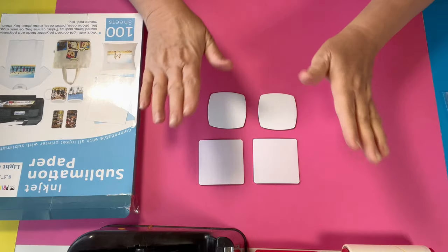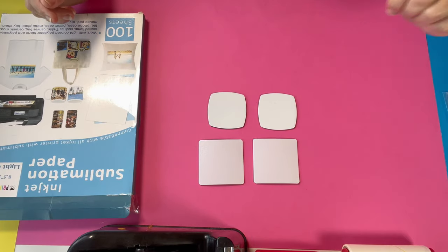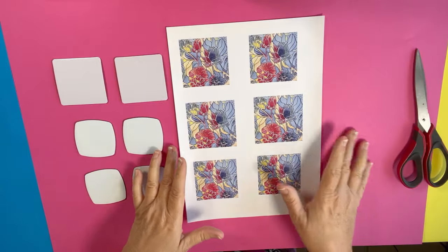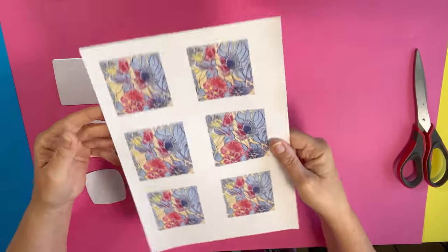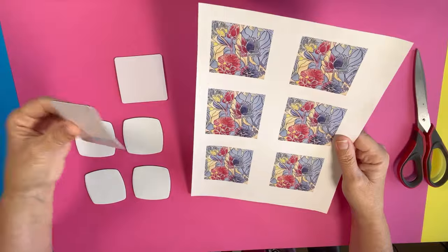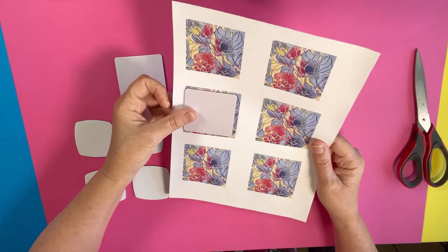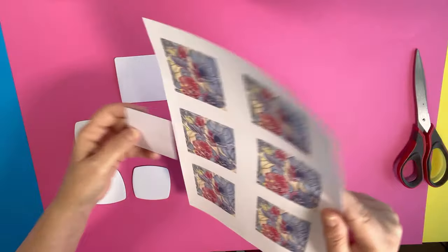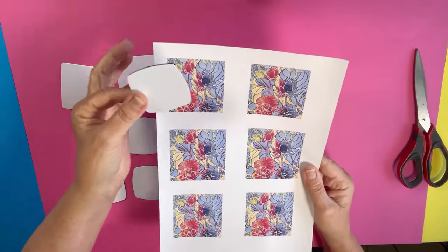You have your printed out image that we made through Inkscape. So this is now printed out and as I was saying, you don't need a lot. You just need enough around it so that that magnet is definitely in a colored area.